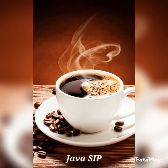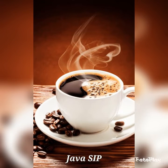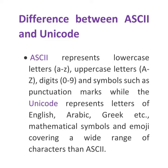Hello guys, welcome to Javaset. Today we will be discussing the difference between ASCII and Unicode encoding standards. ASCII represents lowercase letters, uppercase letters, digits, and symbols such as punctuation marks.